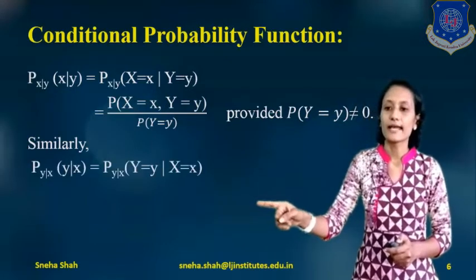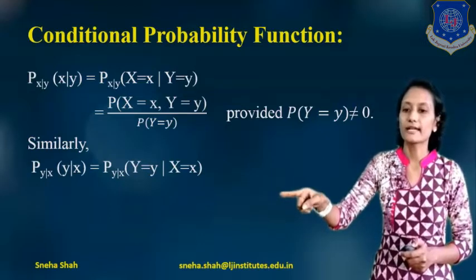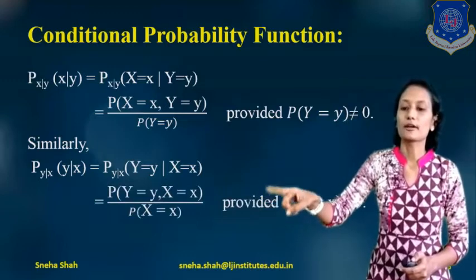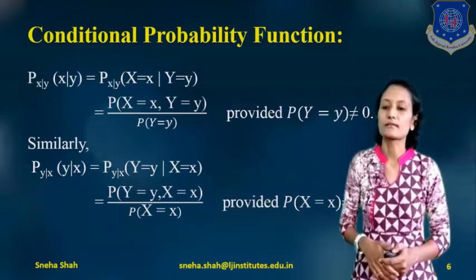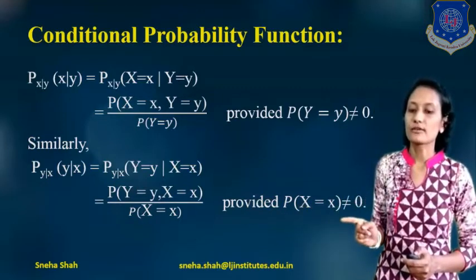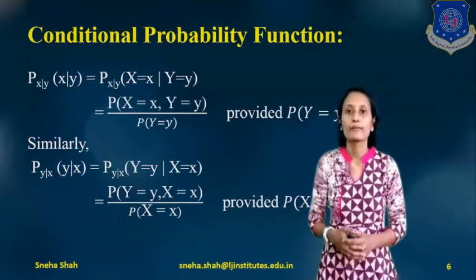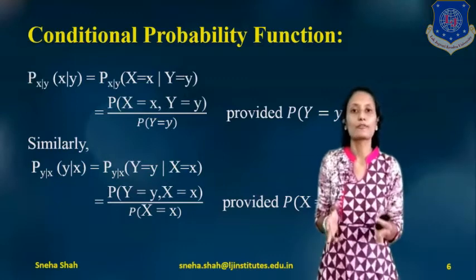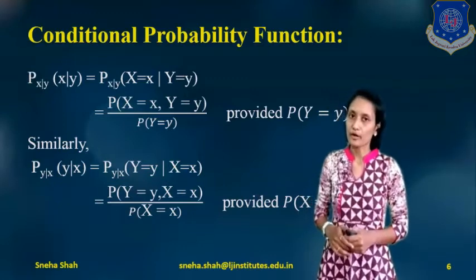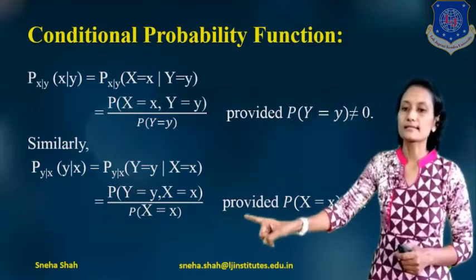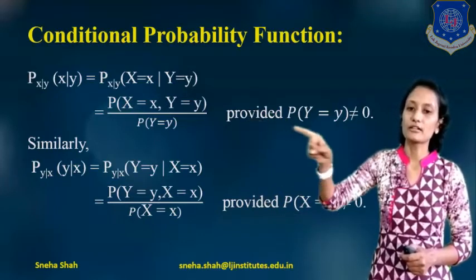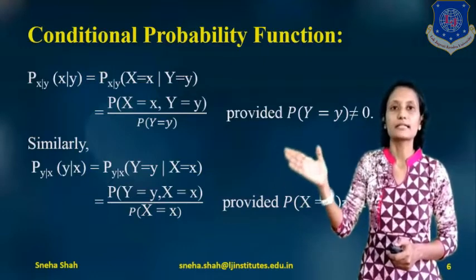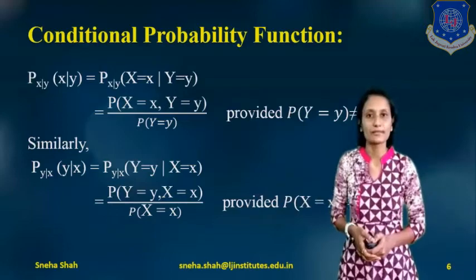Similarly, P_Y|X(y|x) = P(Y = y | X = x) = P(X = x, Y = y) / P(X = x), provided P(X = x) ≠ 0. The denominator cannot be zero because that would give infinite probability, and the maximum value of probability is 1. In the next session, I will explain examples based on this 2-dimensional discrete random variable and its functions. Thank you so much.